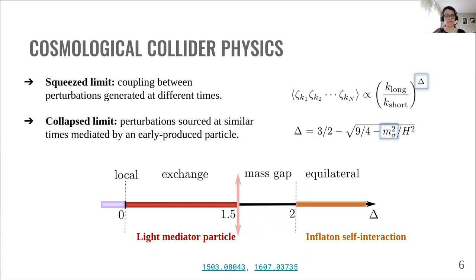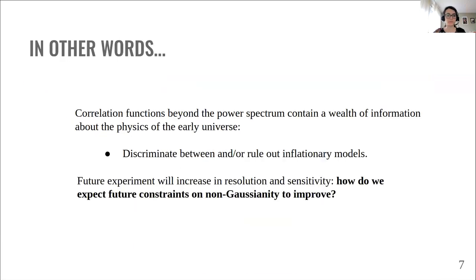As shown in the plot, where we have values of delta in relation to the physics behind it, a value of delta between zero and three halves signals the presence of a light mediator particle in Hubble units, setting long-range correlations. In particular, delta equals to zero refers to the so-called local non-Gaussianity. Values of delta equal or larger than two, instead probe self-interaction of the inflaton and include equilateral non-Gaussianity. So, in other words, looking at higher-order correlation functions beyond the power spectrum can potentially help us to better understand the early universe, in particular, the inflationary mechanism that produces primordial fluctuations.